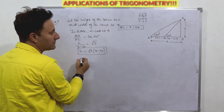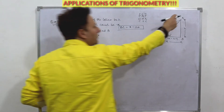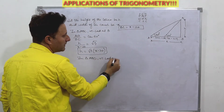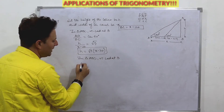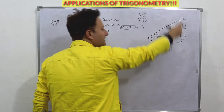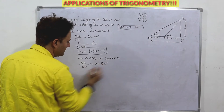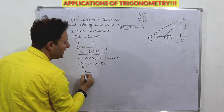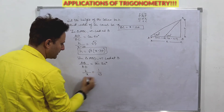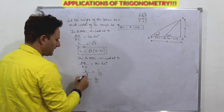Now for the bigger triangle ABD, right-angled at B. AB upon BD equals tan 30°. AB is h, BD is x, and tan 30° is 1 upon root 3. Cross-multiplying gives h = x upon root 3. This is equation two.